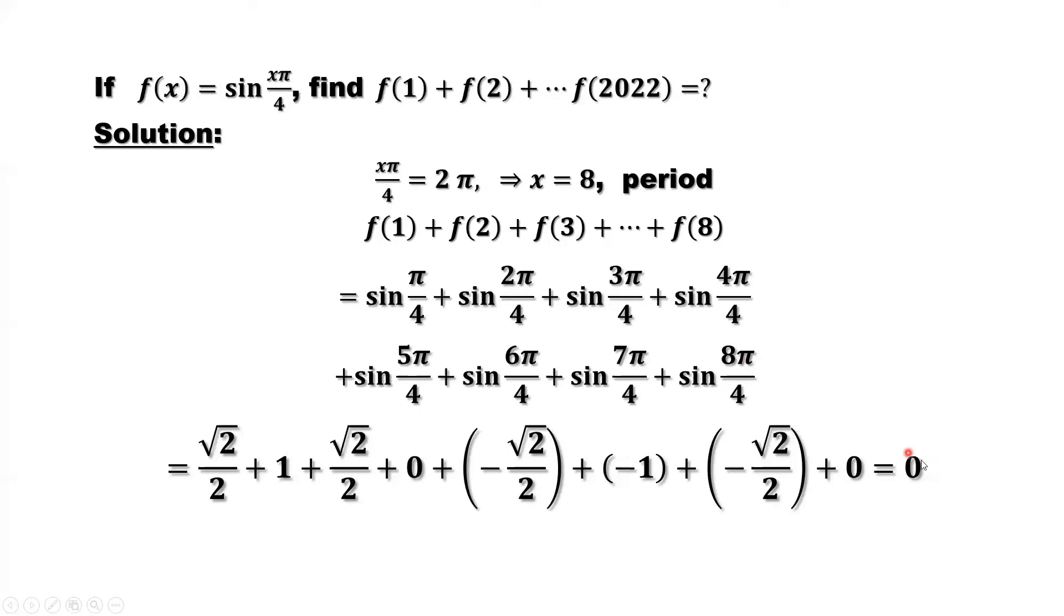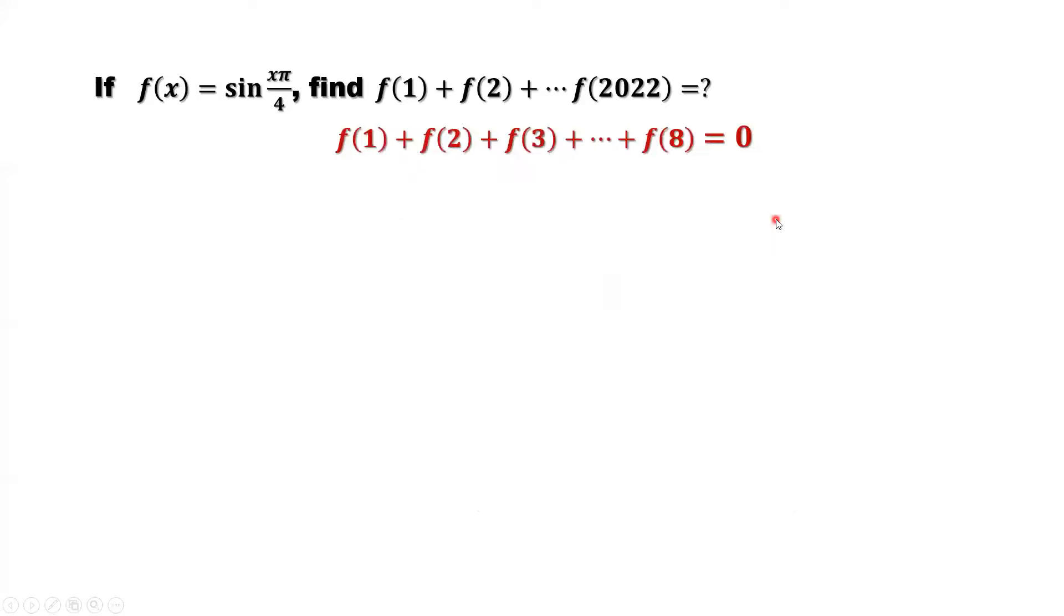Simplify, we got this result, 0. What does this mean? Sum of first eight consecutive terms equal to 0. Because the period for this function is 8, we have this result.